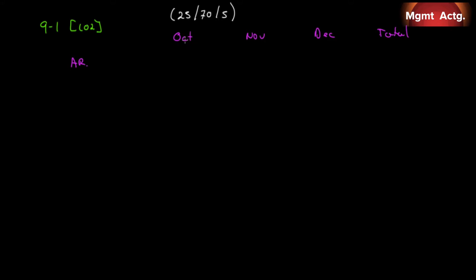Looking at October first: 25% of sales will be collected in October, 70% of October sales will be collected in November, and 5% will be collected in December. Going backwards one month to September: 25% was collected in September, 70% of September must be collected in October, and 5% in November. Going back to August: 25% were collected in August, 70% in September, and 5% will be collected in October. So we have to go back to August to get the accounts receivable.